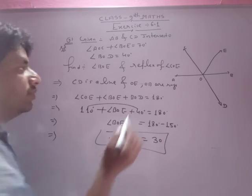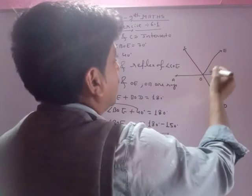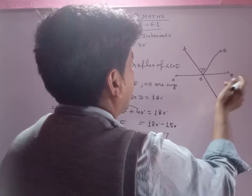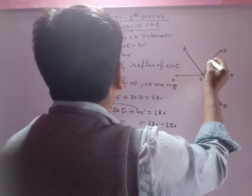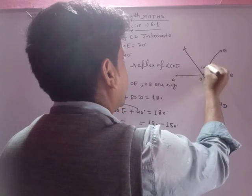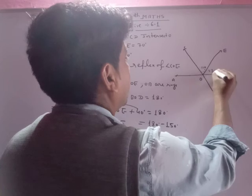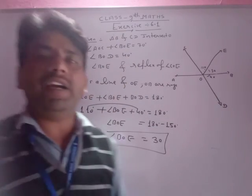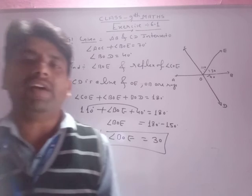अब condition भी satisfy करना था, कि भया, यह 30 है, क्या BOE, यह 30 है, Sorry, COE तो कितना है आफा, 110 है, यह 110 हो गया, और यह 30, और यह 40, तो 180 हो रहा है न, तो 180 की condition को भी satisfy कर रहा है.